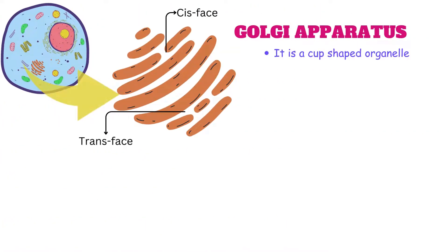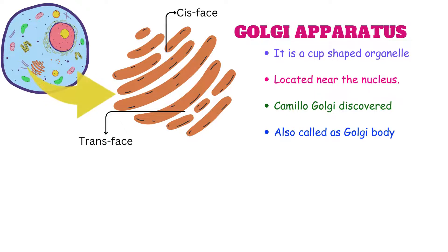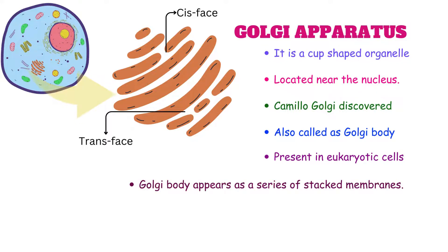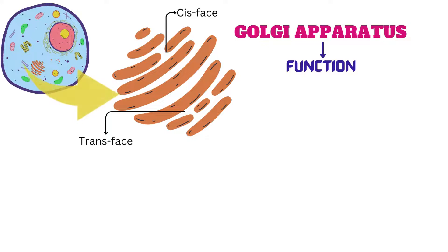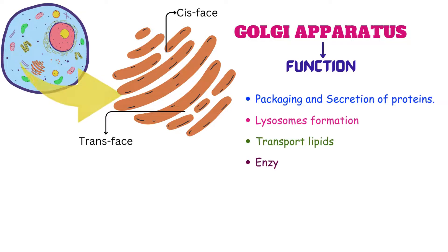Golgi apparatus is a curved-shaped organelle which is located near the nucleus. Camillo Golgi discovered the Golgi apparatus. Golgi apparatus is also called as Golgi body. It is present in eukaryotic cells. Golgi body appears as a series of stacked membranes. It is a membrane-bound organelle present in the cytosol of a cell. Functions of Golgi apparatus are: packaging and secretion of proteins, lysosome formation, transport of lipids, enzymatic activity, and post-translational modification.